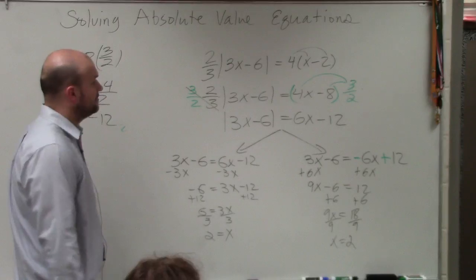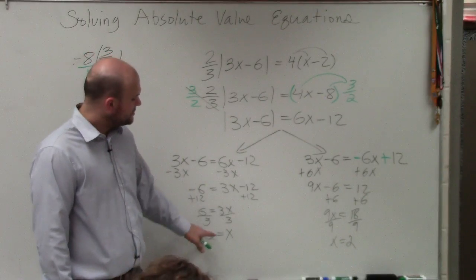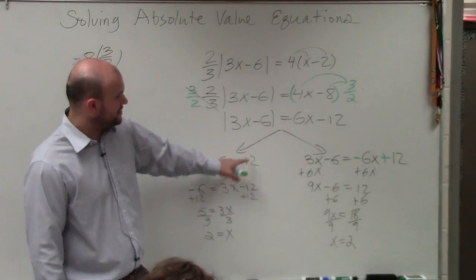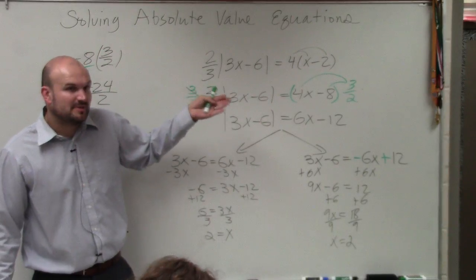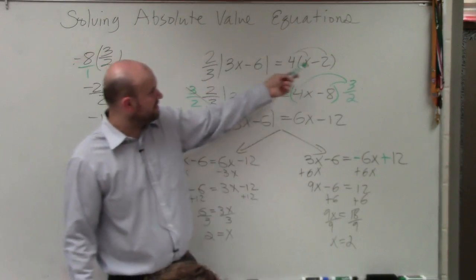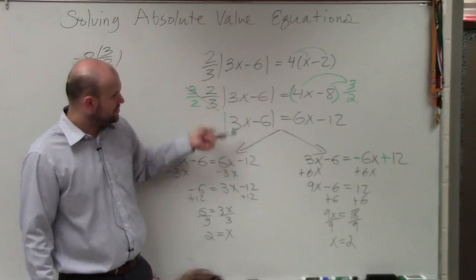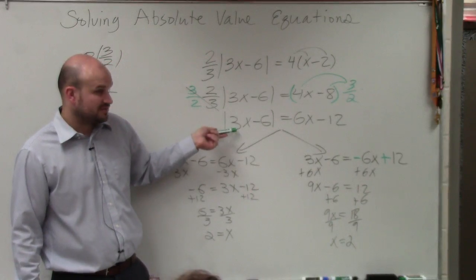So x equals 2, but we've got to go and check our answer. So we go back in, and we plug 2. Now remember, typically when you're checking your answer, you'd plug in 2 in for x and for x, right? But I told you to use the one where the absolute value is isolated, which is right here.